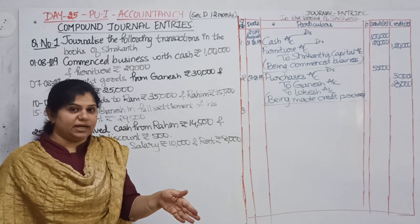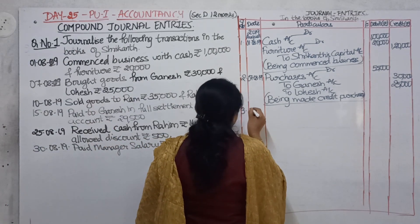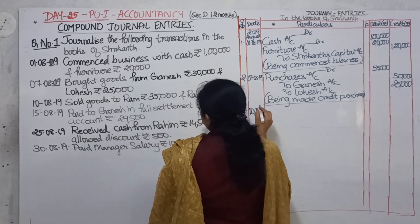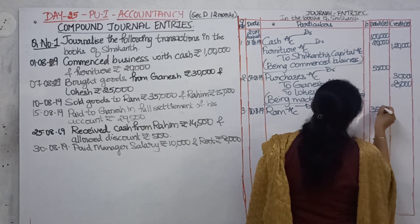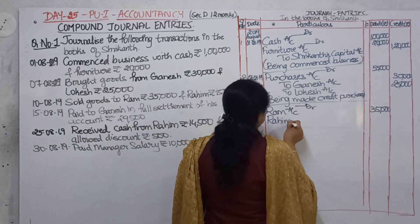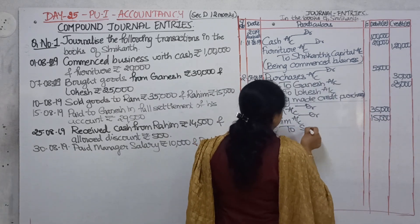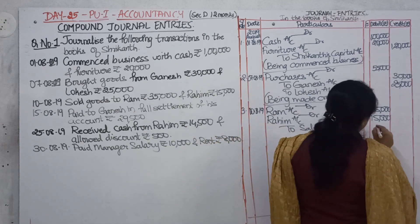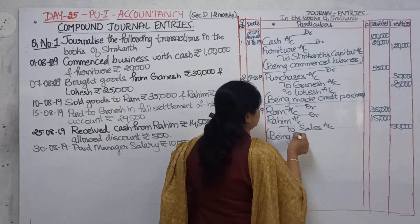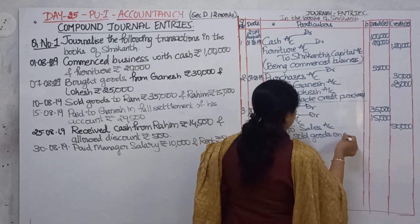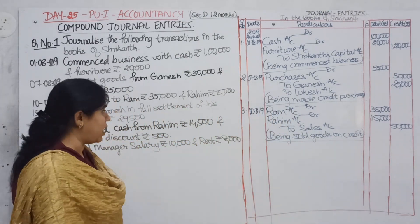Sales — are goods coming in or going out? Going out. So credit. Who are the receivers for these goods? Ram and Rahim both. So put down the date: 10-08-2019. Ram account will be debited for rupees 35,000. Rahim account will also be debited for rupees 15,000. Sales account is credited — amount is rupees 50,000. Narration: 'Being sold goods on credit.' For each journal entry neatly and systematically written, you get 2 marks.